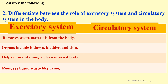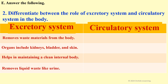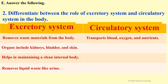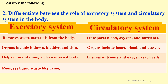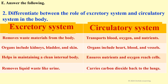Circulatory system: transports blood, oxygen, and nutrients. Organs include heart, blood, and vessels. Ensures nutrients and oxygen reach cells. Carries carbon dioxide back to the lungs.